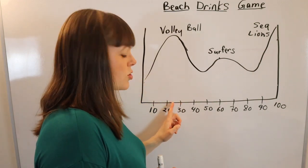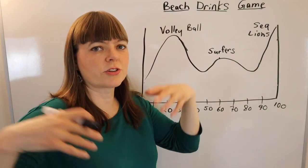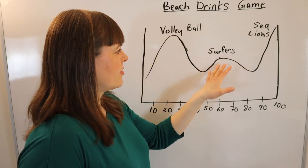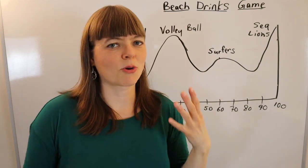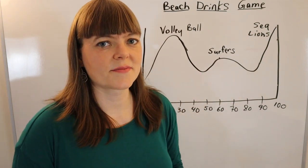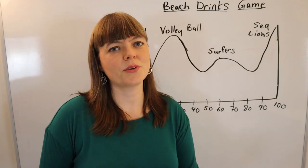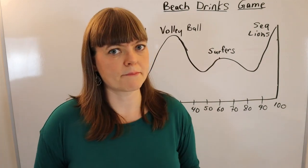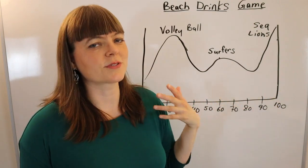The way to understand this diagram is that it gives the population density at each point. At the 25th mile, for example, it represents the total number of people located at that particular mile. We can see there's a cluster of people at the volleyball area, a few more at the surfers' area, and a ton of people at the sea lions portion of the beach. You place yourself according to the population density. Now let me talk about how you would run this and what steps you need.